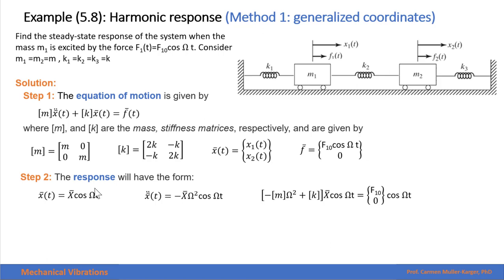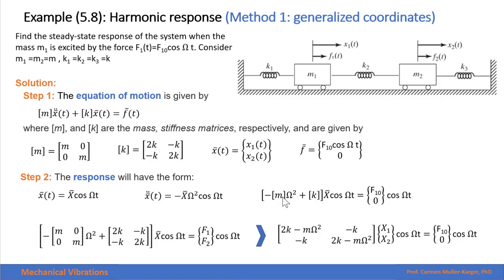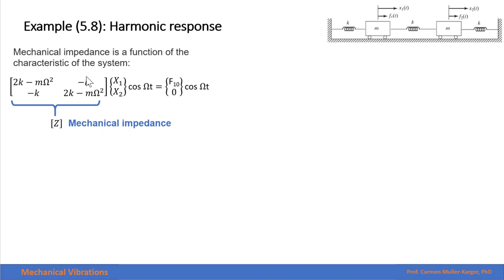The second step is finding the response. The response to a harmonic force will have the same form — we have to find the magnitude, and the frequency will equal the forcing frequency. If we derive this equation twice, we can input these two functions into our equation and get this result. Introducing the mass matrix and the stiffness matrix, we get this equation, which is called the mechanical impedance of the system.